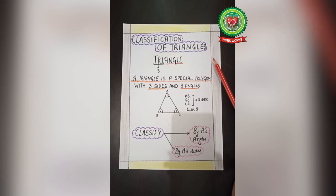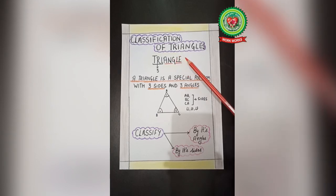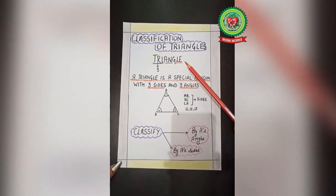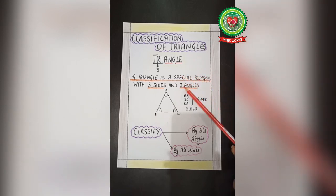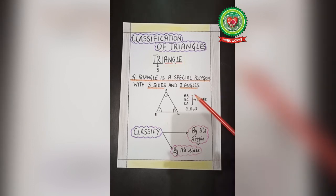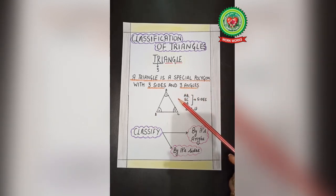I have divided the word 'triangle' into two parts: 'tri' and 'angle'. Tri means three and angle means angles, so triangle means three angles. A triangle is a special polygon with three sides and three angles, or we can say that a triangle always has three sides as well as three angles.